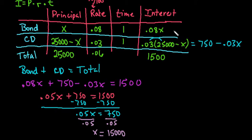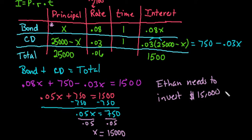So if we look back up here, that's why having this helps us out. We can see that our bond is the $15,000. So for this, we would say that Ethan needs to put $15,000 into the bonds.